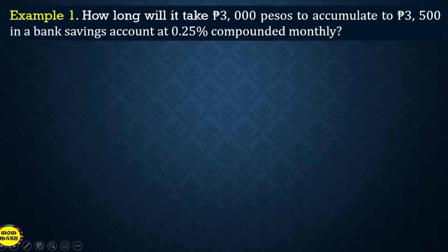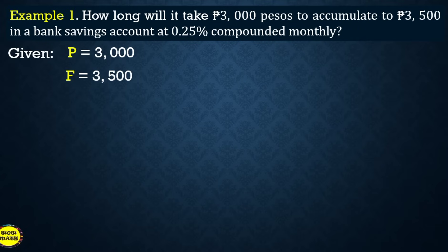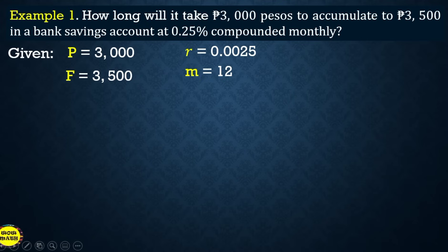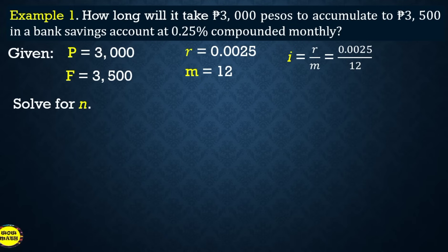For example 1: How long will it take 3,000 pesos to accumulate to 3,500 pesos in a bank savings account at 0.25% compounded monthly? The given values are: present value = 3,000; future value = 3,500; interest rate = 0.25%, converted to decimal = 0.0025; m = 12 because compounded monthly; and i = r/m = 0.0025/12.